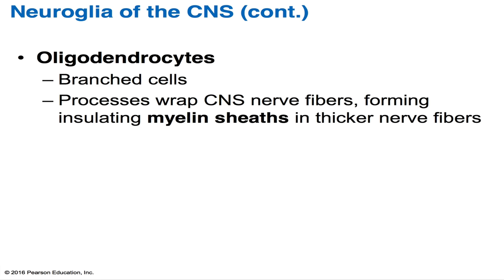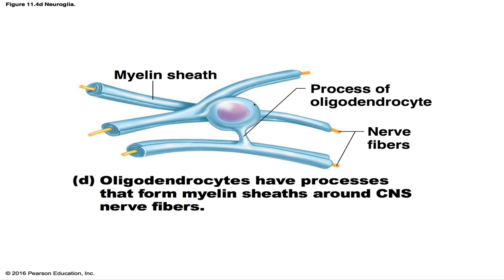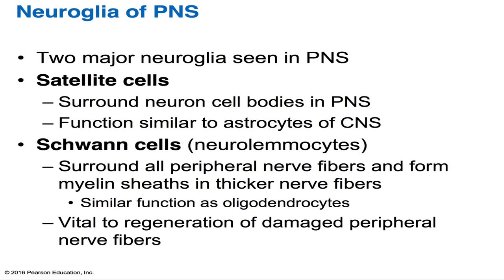Oligodendrocytes have fewer processes than astrocytes or microglia. They line up along thicker neuron fibers in the CNS and wrap their processes tightly around the fibers, producing an insulating cover called the myelin sheath. A single oligodendrocyte can myelinate segments of multiple axons simultaneously.